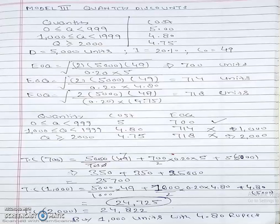For convenience, demand equals 5,000 units and interest on borrowed capital is 0.20 or 20%, while ordering cost is 49 rupees per order.